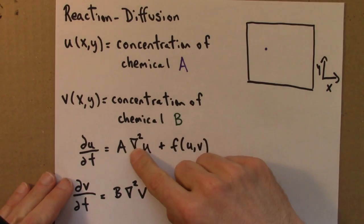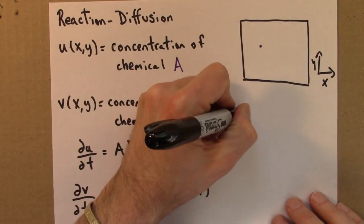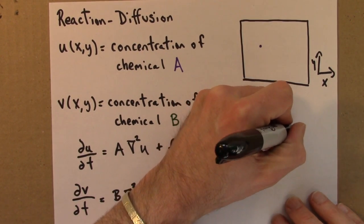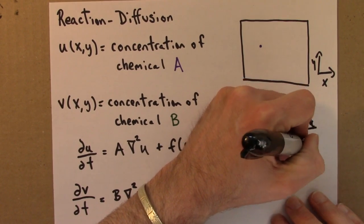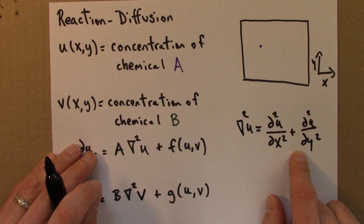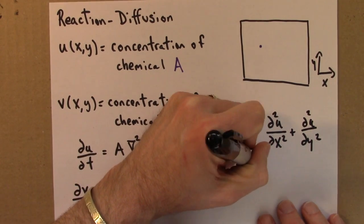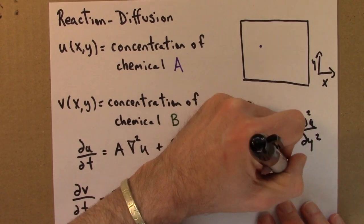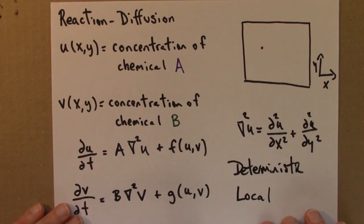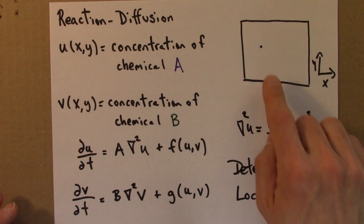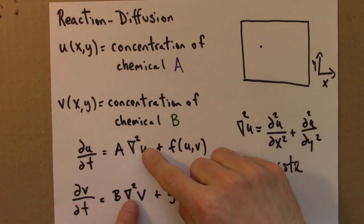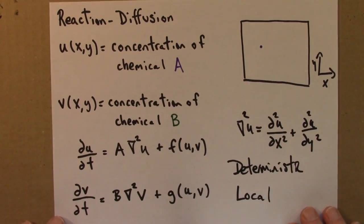As before, del squared is the Laplacian. Let me just write this out for completeness's sake. So that's the second derivative of u with respect to x, plus the second derivative of u with respect to y. And let me just write that this is deterministic and local. So here we have a deterministic dynamical system. It's spatially extended, but the rule is local. And what we'll see is that this deterministic and local system, even though it has diffusion in it, is able to produce stable spatial structures and patterns.